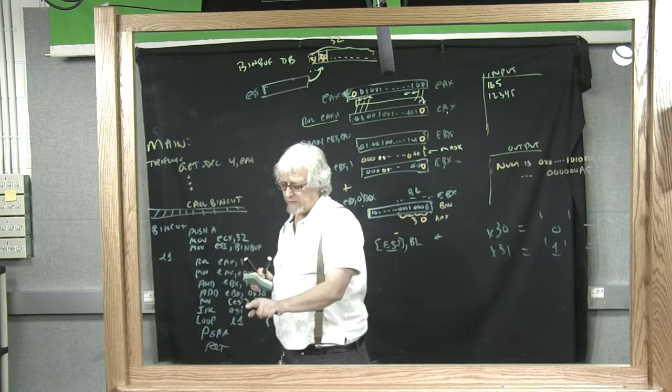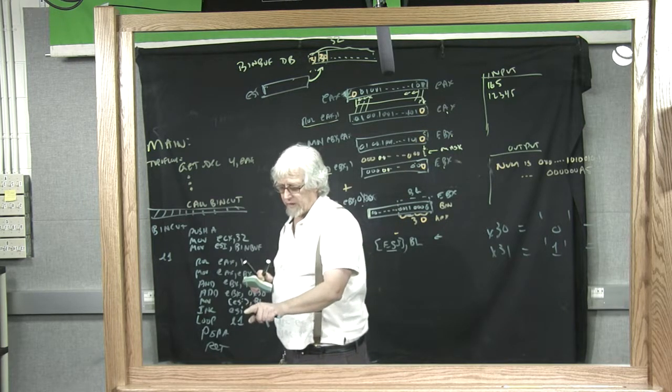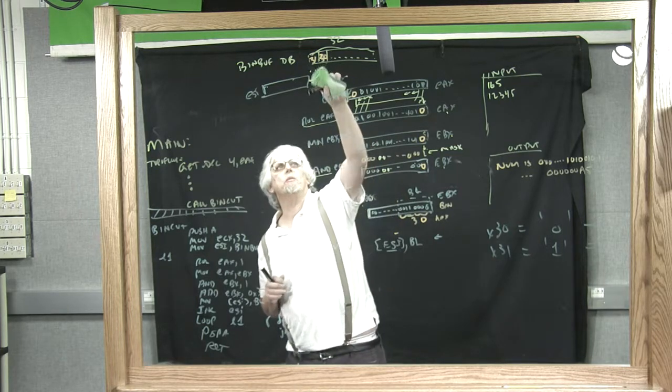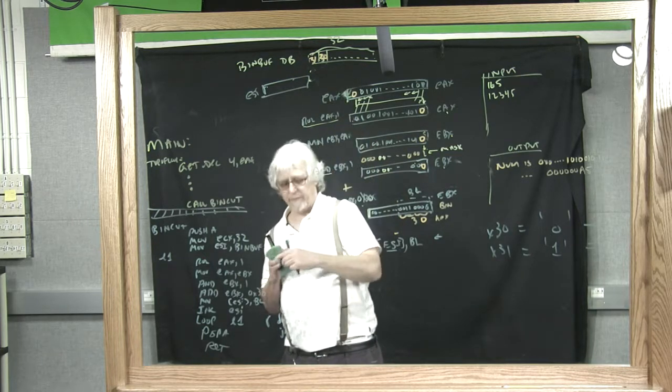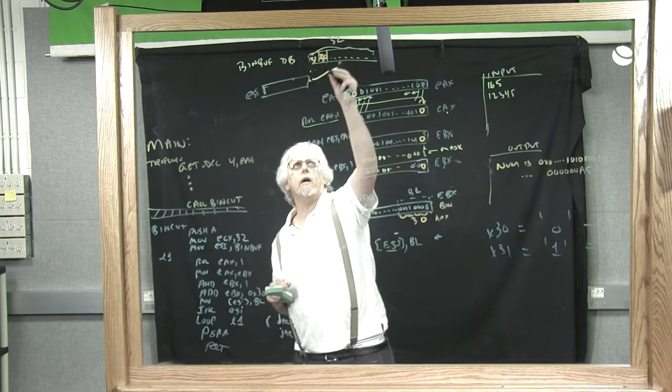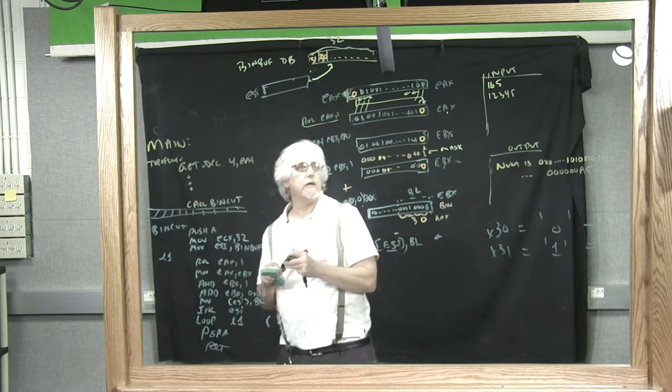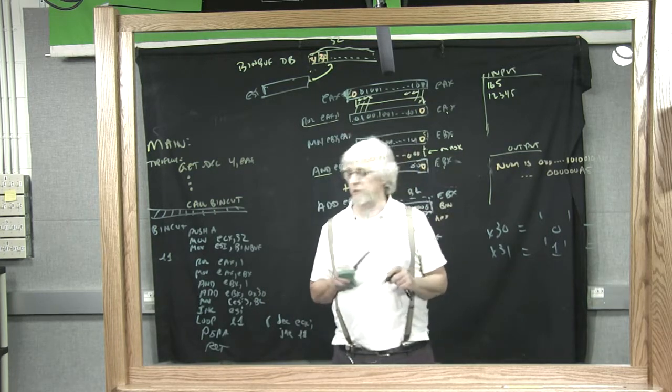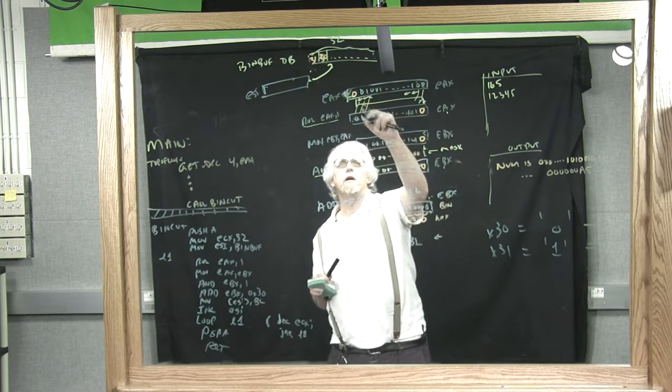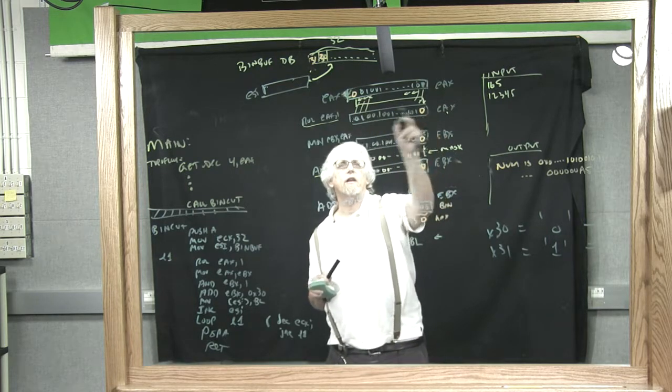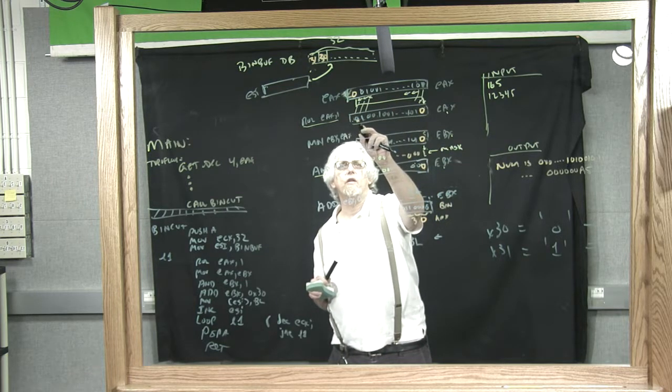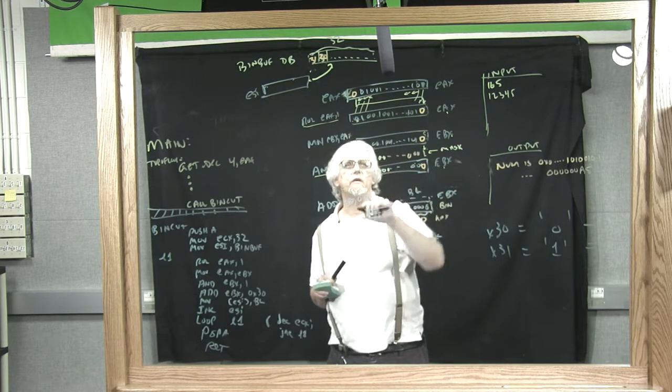We're now down to here. We increment ESI. ESI is now going to point to the next byte. Move back up to the top. Here we are. EAX has now got this in it. So this is now the high order character.